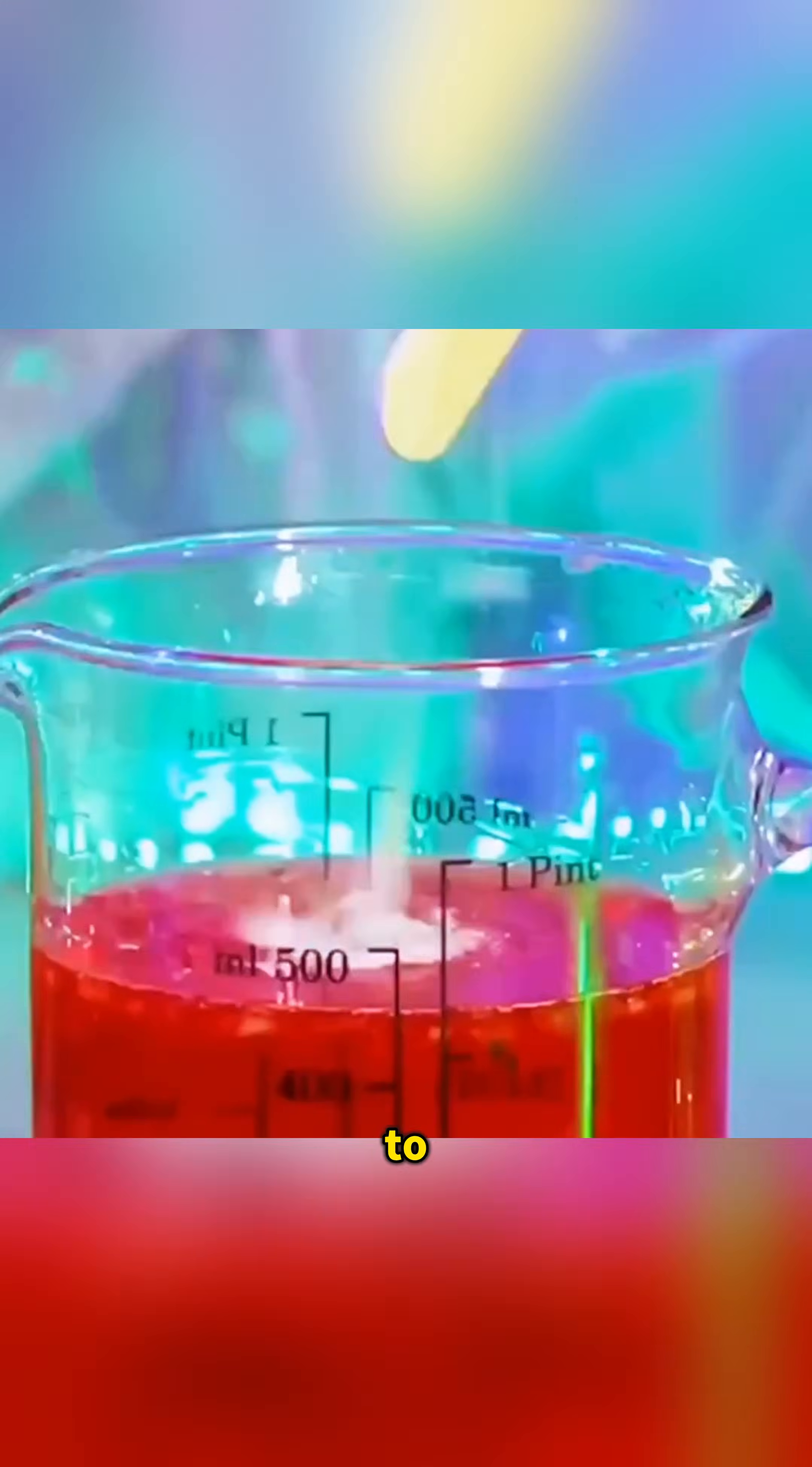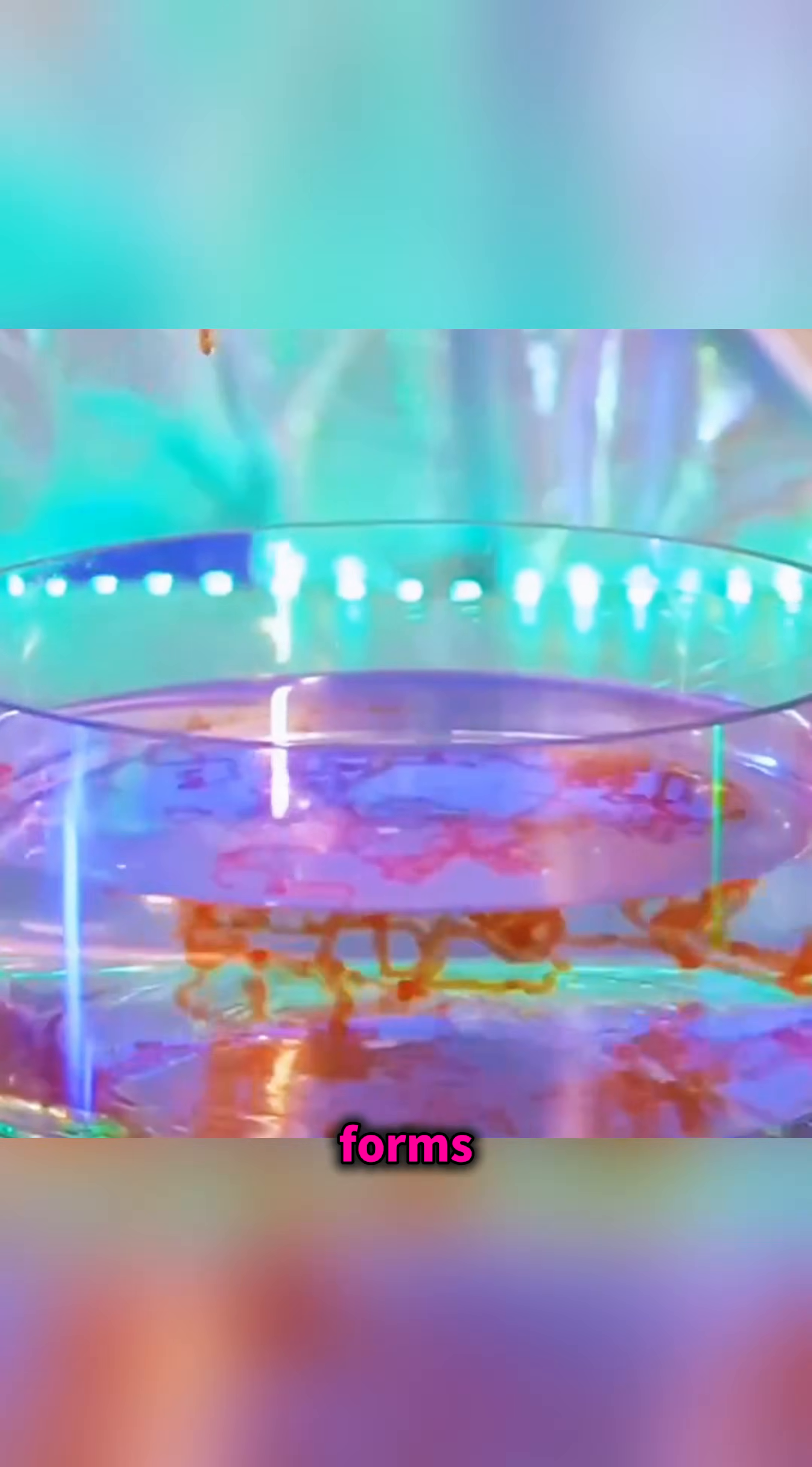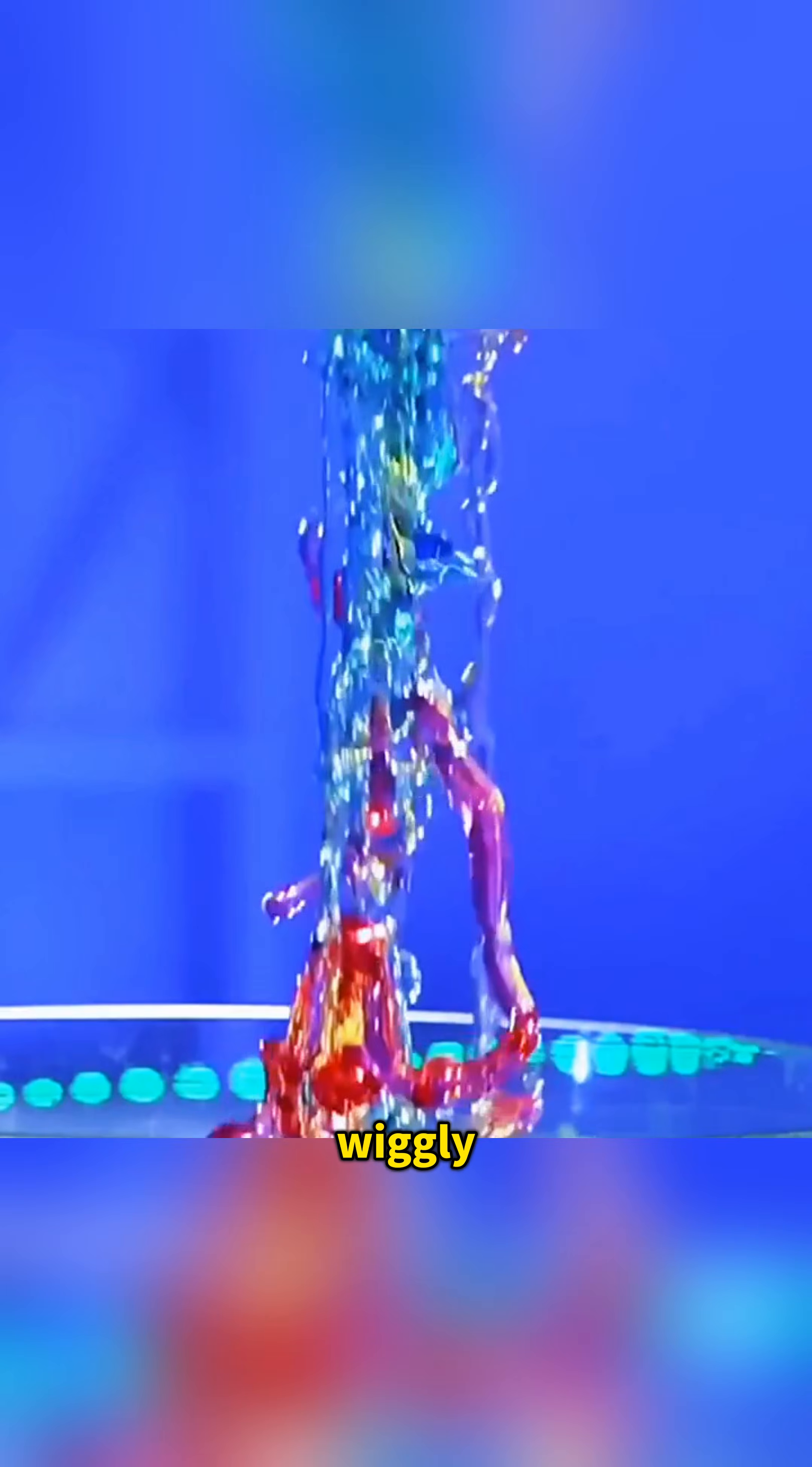Add a spoon of calcium chloride to alginate solution and stir it well so it mixes completely. Then use a syringe to inject it into water and it forms soft strands that look like wiggly noodles drifting around.